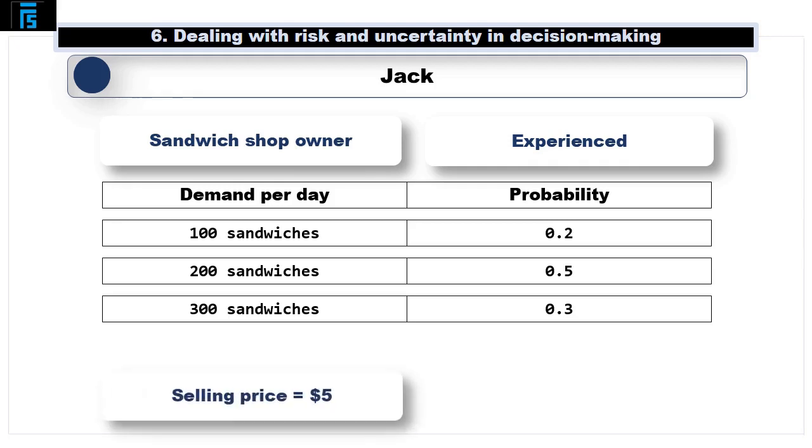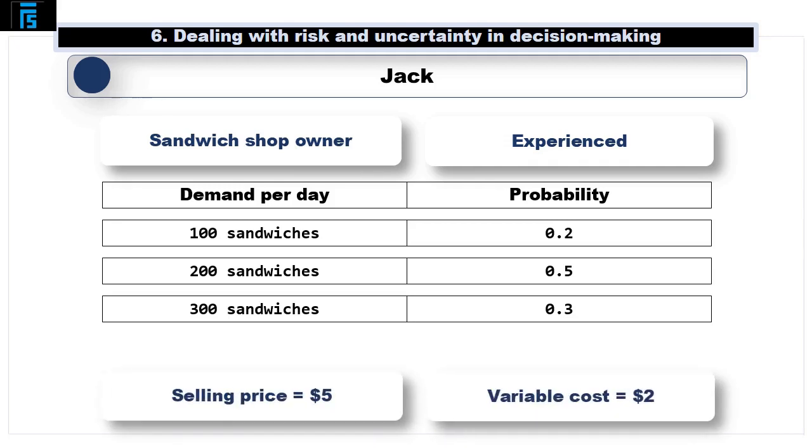Jack sells sandwiches for $5 each, and they have a variable cost of $2 associated with them.